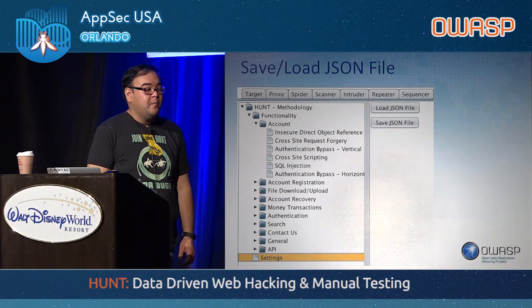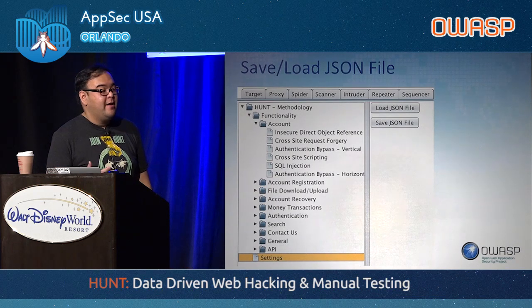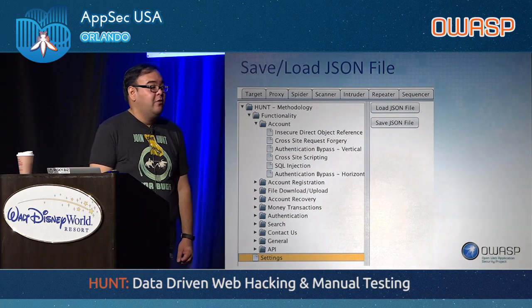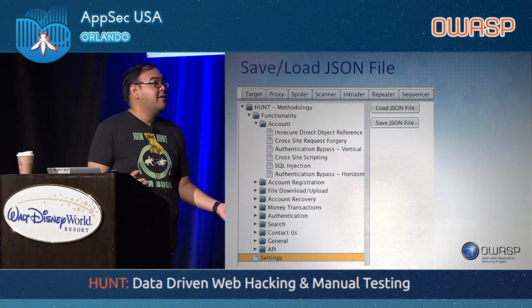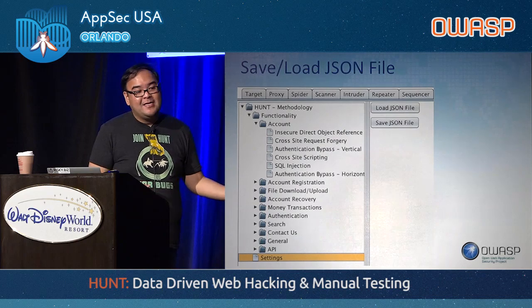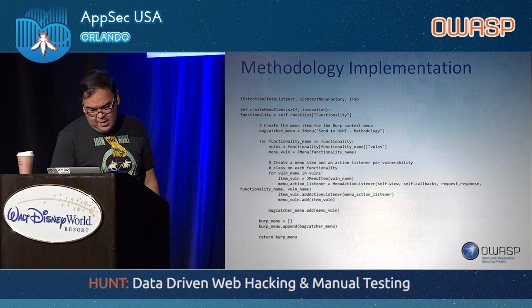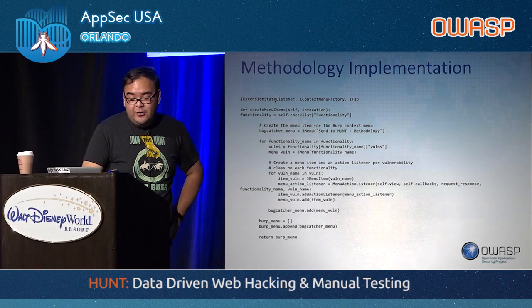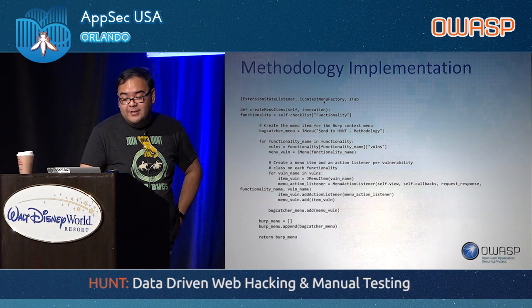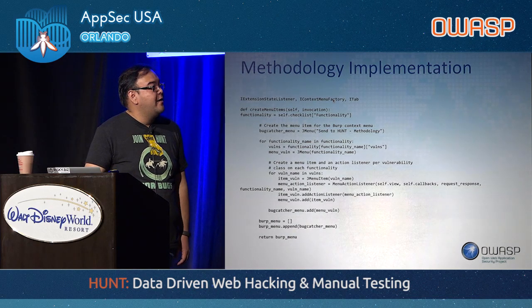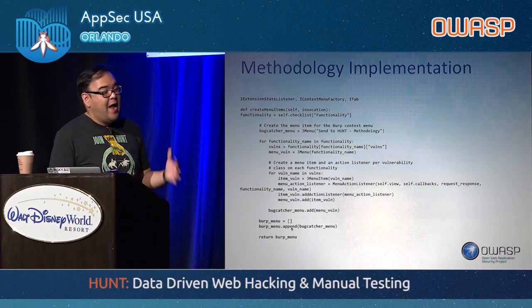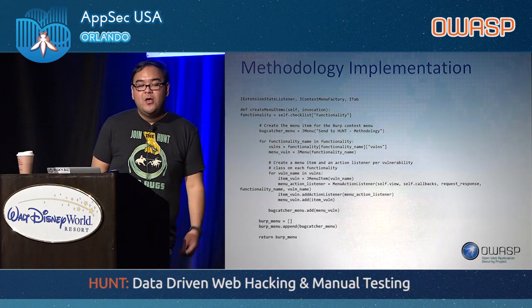We wanted to make it not only easy and efficient for pen testers, but also extensible. If you have your own testing methodologies or wanted to add your own stuff, we wanted to make it easy for you to do that. This is what the methodology implementation looks like — we used the extension state listener, context menu factory to make that right-click menu, and the itab to make the window. It all comes down to 'create menu items' on the backend, which makes that right-click context menu so you can send request and response pairs to the tool.